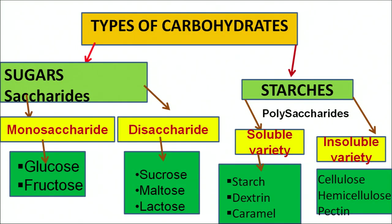Carbohydrates have been divided into two major categories: sugars and starches. Sugars are further divided as monosaccharides and disaccharides. Starches are divided as soluble varieties and insoluble varieties. Monosaccharides include glucose and fructose. Disaccharides include sucrose, maltose and lactose. In starches, we have soluble varieties — starch, dextrin and caramel — and insoluble variety which includes cellulose and hemicellulose.